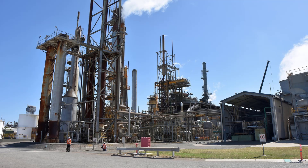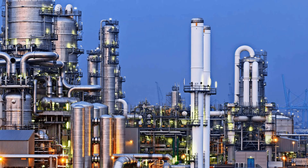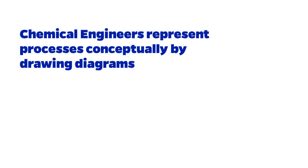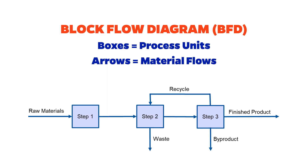Chemical processes can look complicated and intimidating, even for experienced chemical engineers. There are pipes going all over the place, and vessels sometimes look the same even though they perform different functions. It's challenging, if not impossible, to know exactly what's going on in a chemical process just by looking at it. To help conceptualize processes, chemical engineers frequently represent them with diagrams. The simplest type of such a diagram, and the one that we'll draw and use the most often in MEB, is called the block flow diagram.